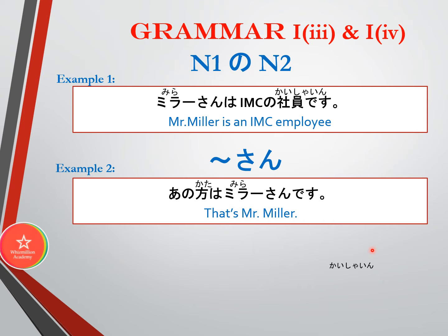The next grammar is san. San is added to the given name or family name of the listener to show the speaker's respect to that person. We should never use san on our own name. Normally for young children, we add the word chan next to the name instead.